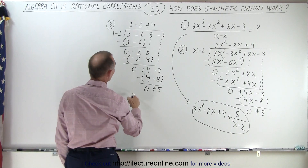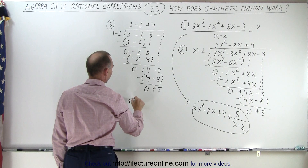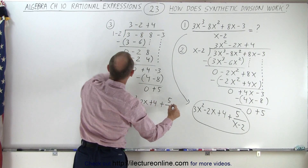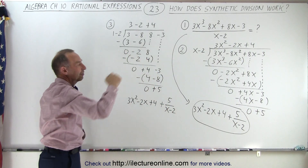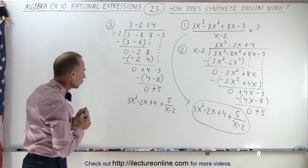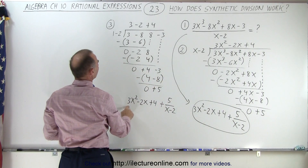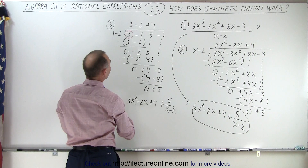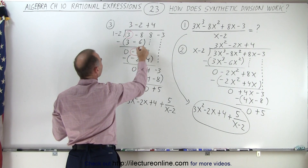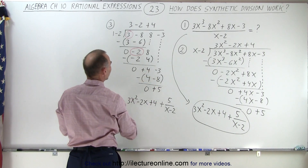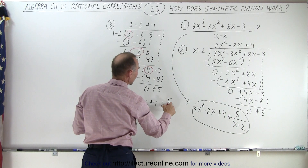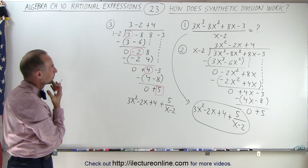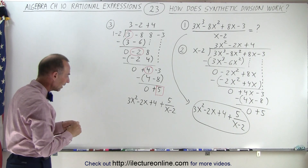That means the result is 3x squared minus 2x plus 4, with remainder plus 5 divided by x minus 2 — the very same result as before. But now we have to notice something: the number 3 here is the same as the 3 over there; minus 2 here is the same as minus 2 over there; the 4 here is the same as the 4 over there; and the remainder 5 here is the same as the remainder 5 over there. So how do we get those numbers using synthetic division? That's going to be our next step.